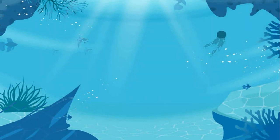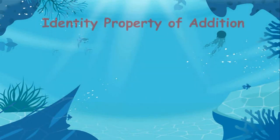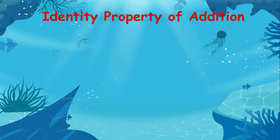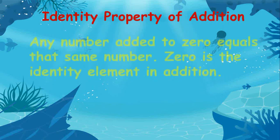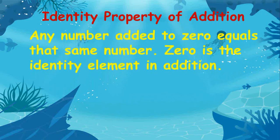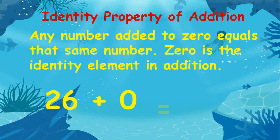The identity property of addition states that any number plus 0 equals that same number. 0 is the identity element. An example is 26 plus 0 is equal to 26.